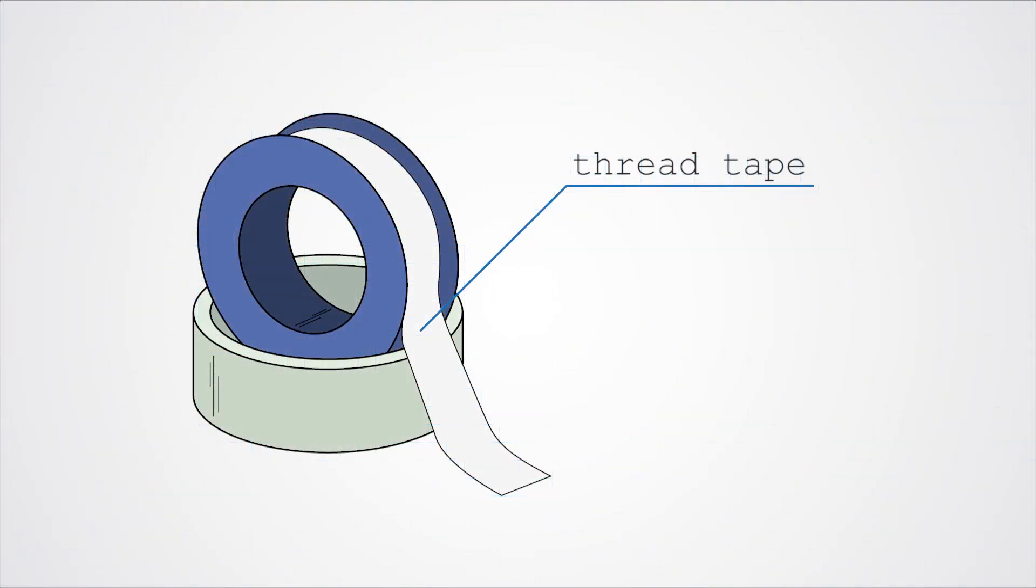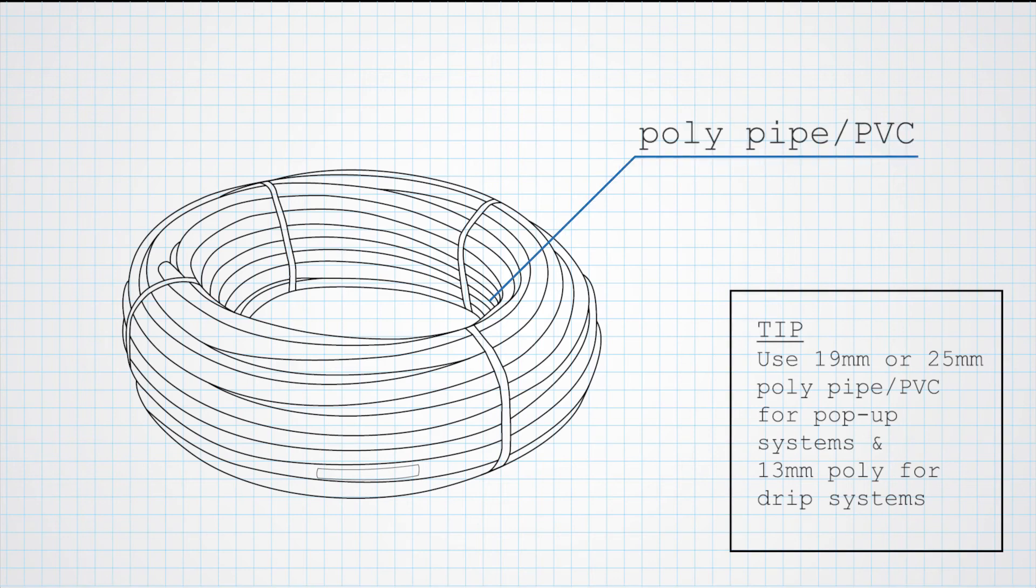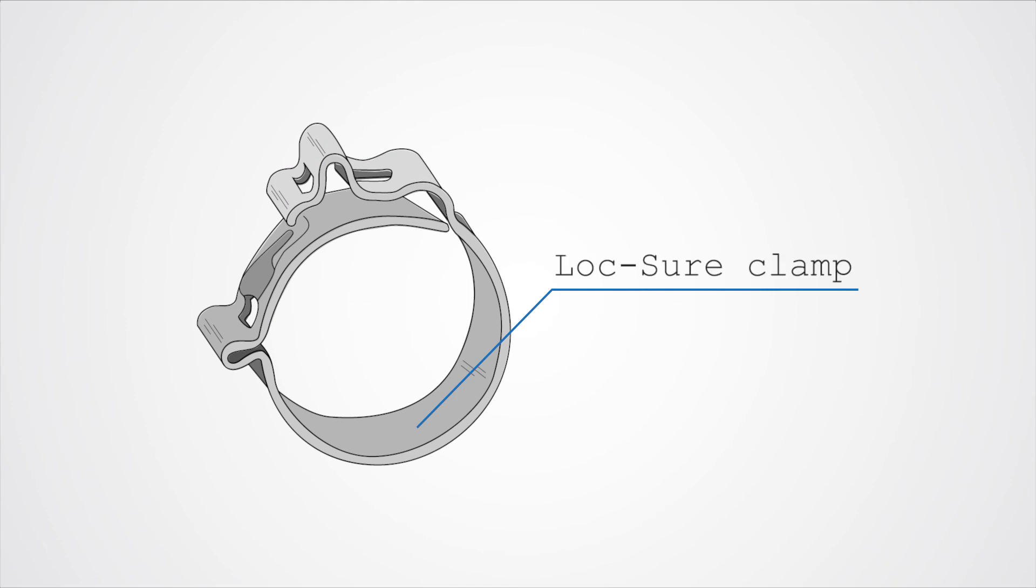To make it extra watertight, use thread tape around the connection. To connect it all to your system, use poly pipe and secure with a lockshore clamp.